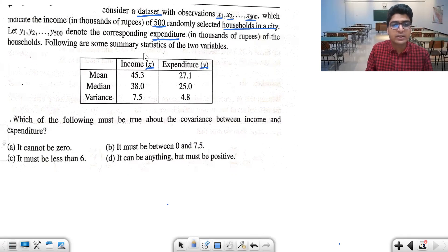Following are the summary statistics of the two variables: mean, median, and variance. The question asks which of the following must be true about the covariance between income and expenditure. The options are: it cannot be zero, it must be between zero and seven point five, it must be less than six, or it can be anything but must be positive.